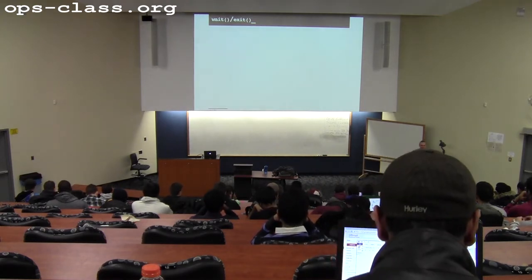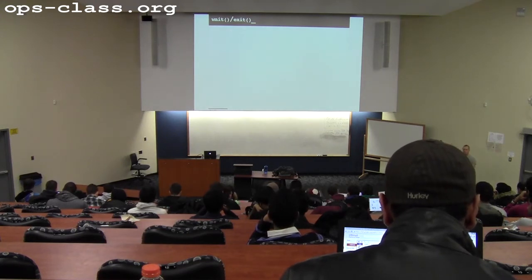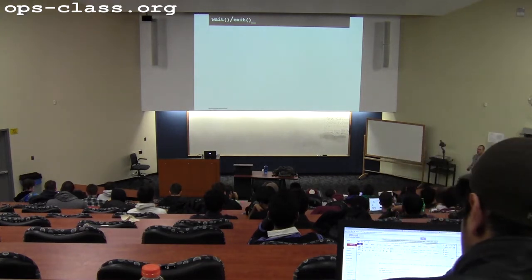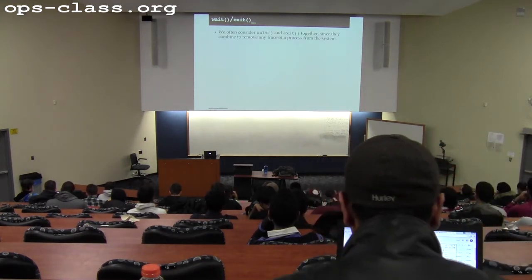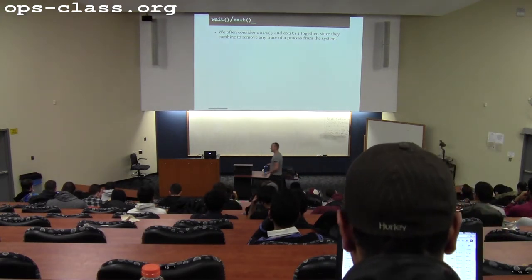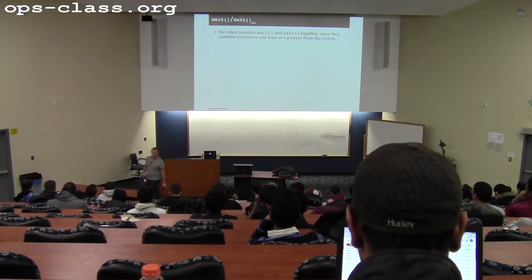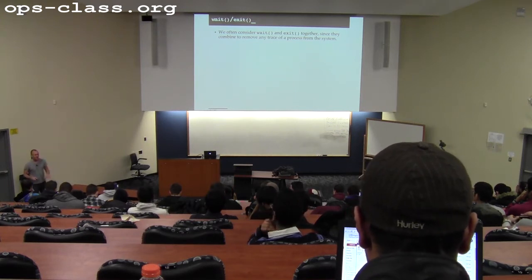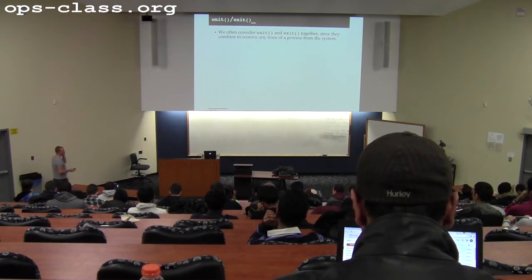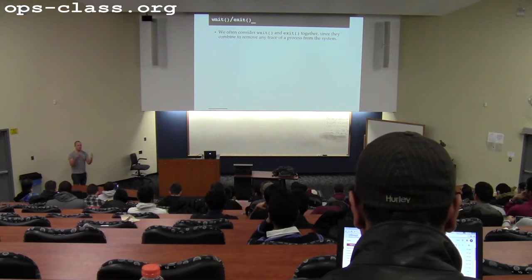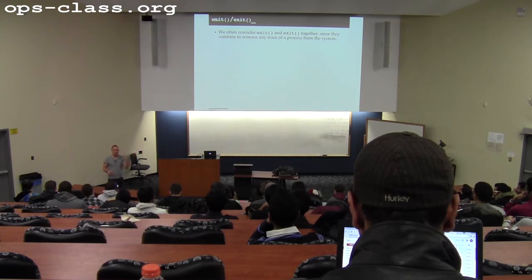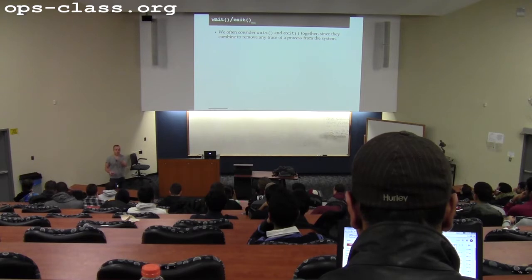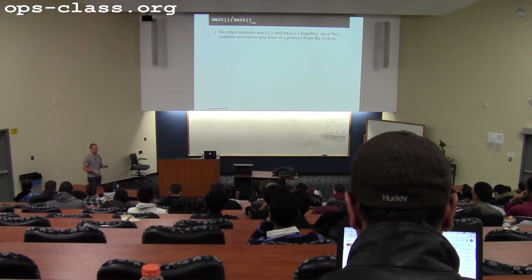Last time we got to the point of talking about wait and exit. We talked about the process life cycle, how processes are created using fork, how they change into other types of processes using exec. Wait and exit are ideal to think about together because when I exit, I get to pass a small amount of information to the parent. That information and the child's process ID are preserved until the parent calls wait. The parent can call wait before the child calls exit, or after — in either case the result has to be the same. This is a little synchronization problem you'll get to solve for assignment two.